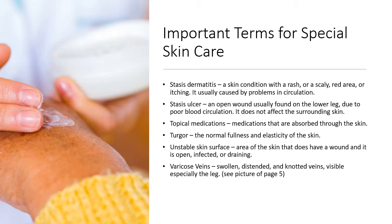Unstable skin surface is an area of skin that does have a wound and it is open, infected, or draining — also called poor skin integrity. Varicose veins are swollen, distended, and knotted veins, visible especially in the leg. They occur most often in people who stand or sit motionless for long periods of time.